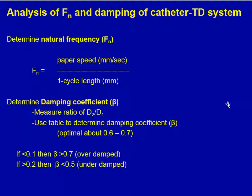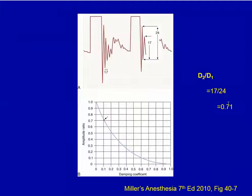You determine the natural frequency from the formula and the damping coefficient by measuring the ratio of the second cycle to the first cycle, then read it off of a curve. This curve relates the damping ratio to the damping coefficient.